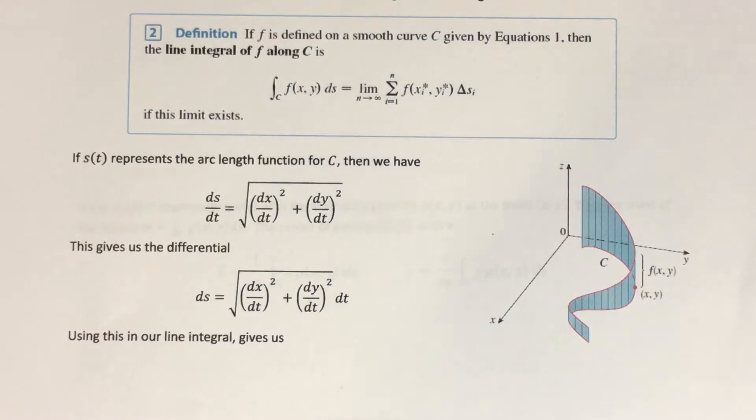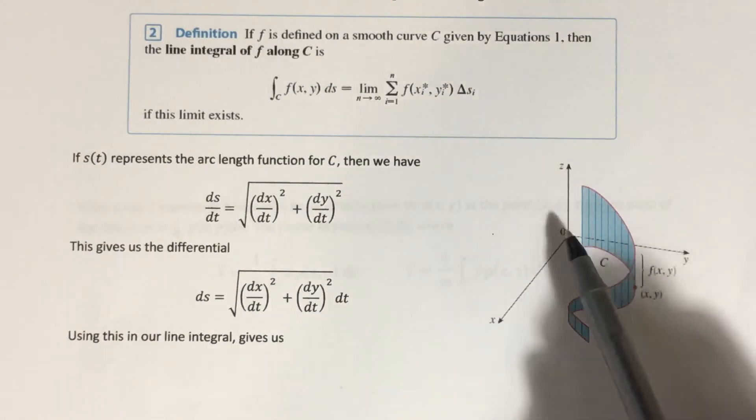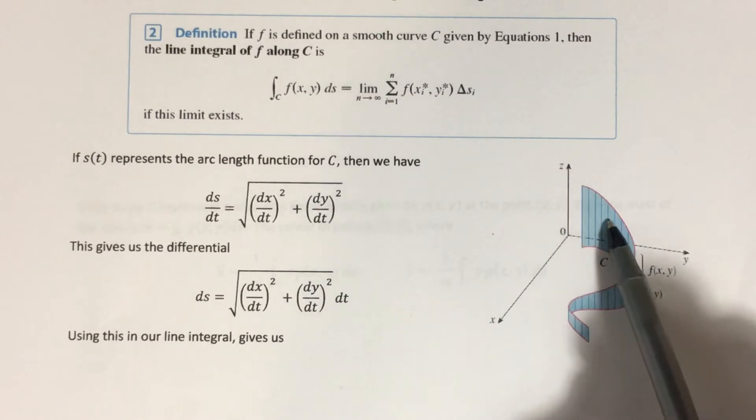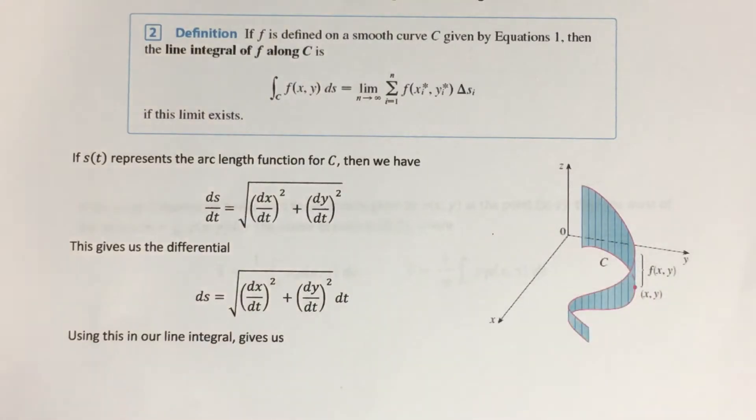But the place that I left off, I was talking about this interpretation of the line integral. You can interpret it as the area of one side of this curtain here. Honestly, it's not a very good interpretation, even though it's technically correct. It doesn't really give us any insight into what a line integral is used for.